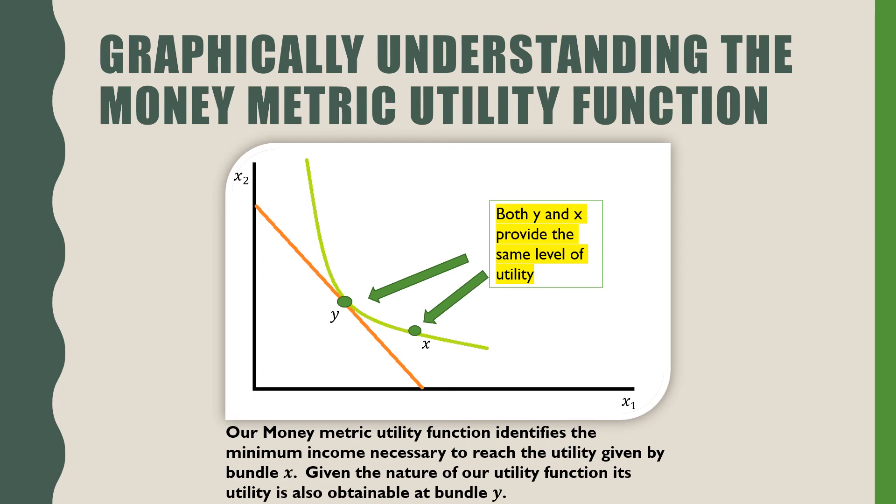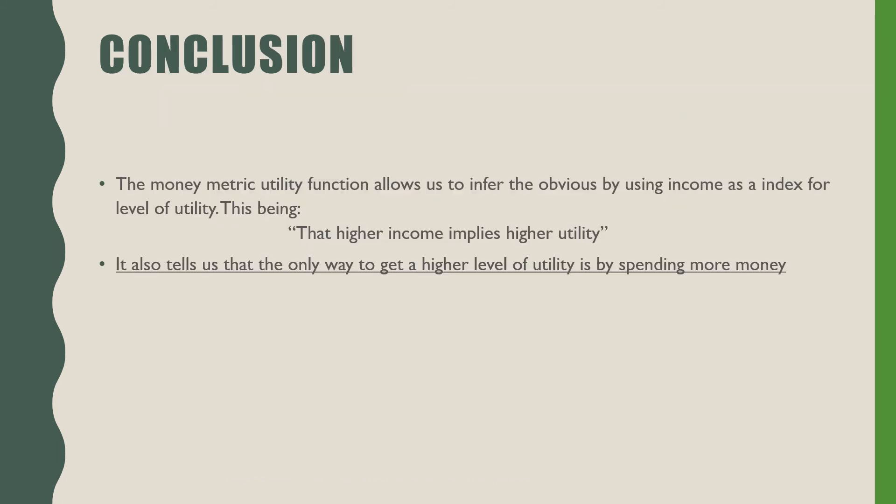That's what it does. To conclude, the money metric utility function allows us to infer the obvious by using income as an index for the level of utility. This being that higher income implies a higher level of utility.